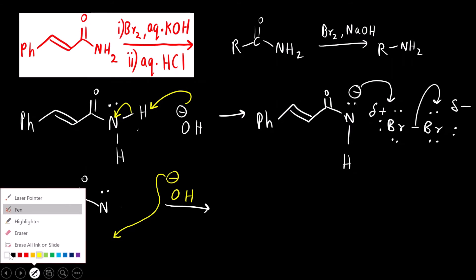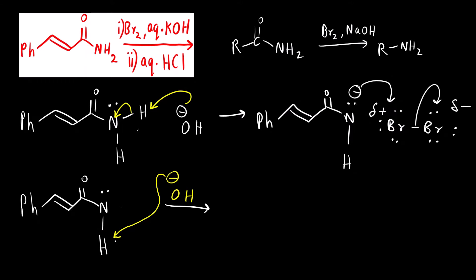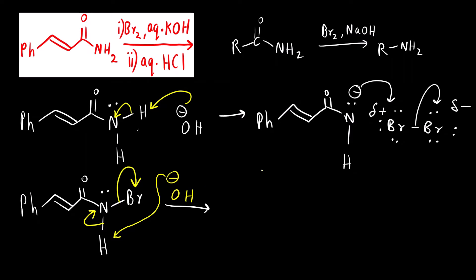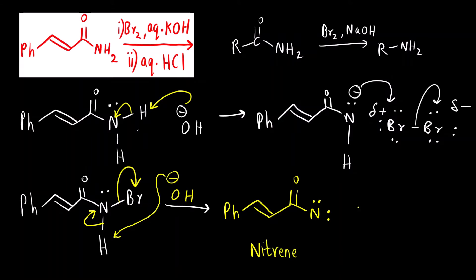What we get is a nitrene — Ph-C(=O)-N: — this intermediate is called a nitrene. The electrons come onto the nitrogen atom and Br⁻ is lost, giving Ph-C(=O)-N:, a nitrene intermediate.